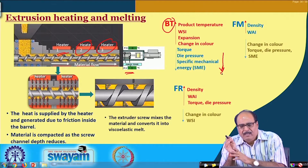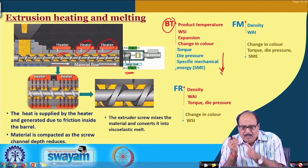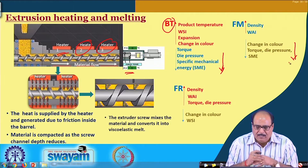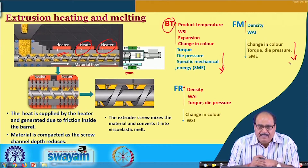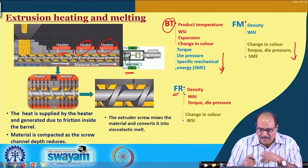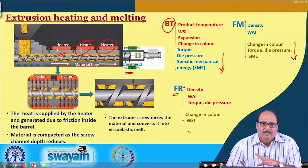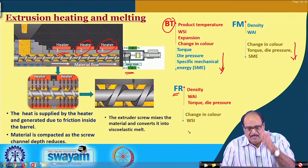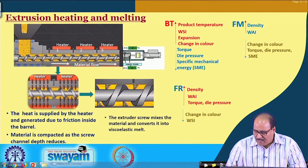As far as feed moisture is concerned, if feed moisture is high, the density and water absorption index will be more, while colour change, torque, die pressure and specific mechanical energy will be less. Density, water absorption index, torque and die pressure increase with an increase in feed rate, while colour change and water absorption index decrease with an increase in feed rate. One should appropriately maintain barrel temperature, feed moisture and feed rate to get the desired system parameters and ultimately the desired product characteristics.